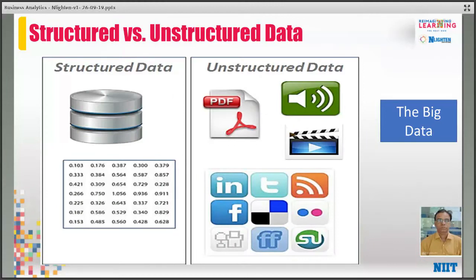Structured versus unstructured data — we keep hearing these terms, and we also hear the word 'big data.' Structured data is the data which is stored in the form of tables, columns and rows, and there is a data type — numeric data type, string data type, various data types. These are structured data, and you can arrive at a lot of meaning from them.